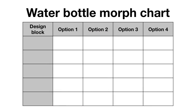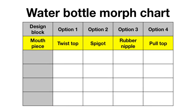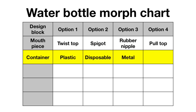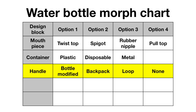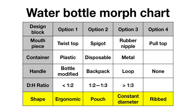We identified a number of design blocks for the design of the water bottle. First, we considered the design block of the mouthpiece, because we had many ideas about how to design a new mouthpiece. We also considered the container, specifically the types of materials that the container could be made of. We considered a handle — how to hold onto the water bottle or attach it to a backpack. We also considered the diameter to height ratio, as well as the shape of the container.